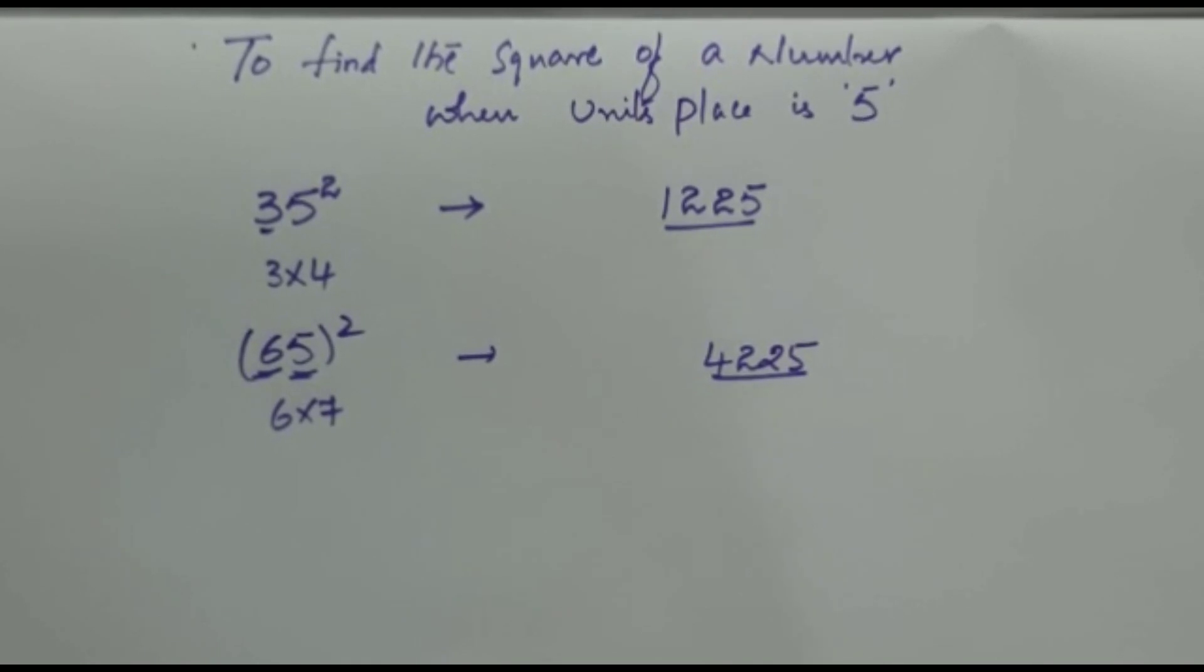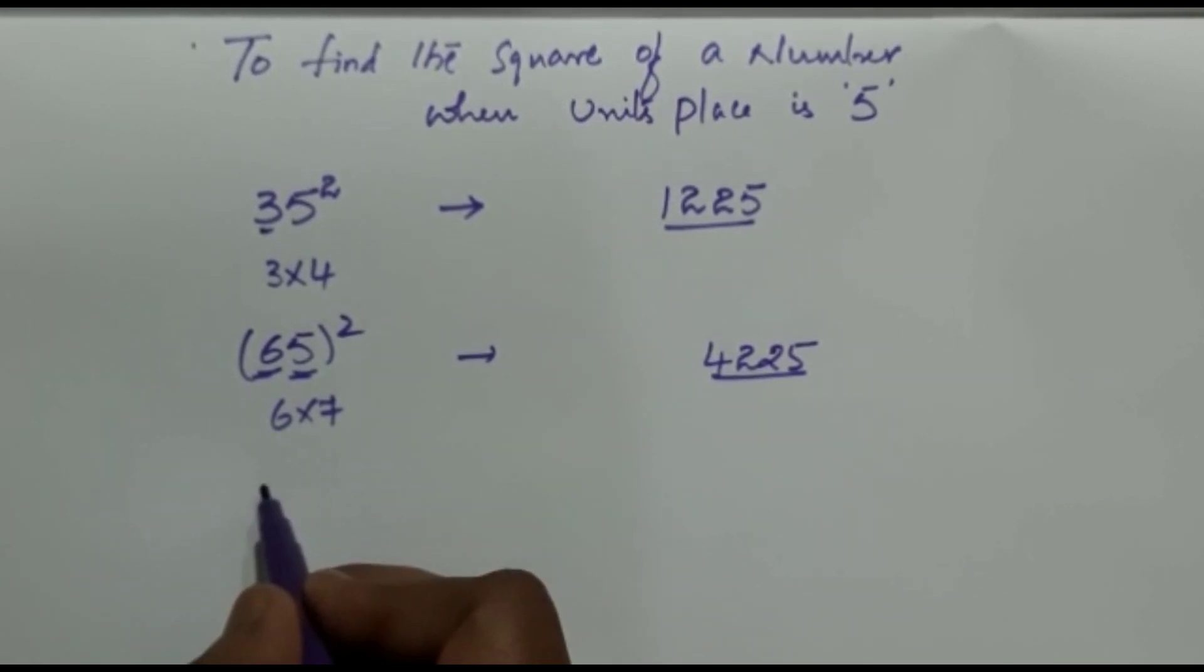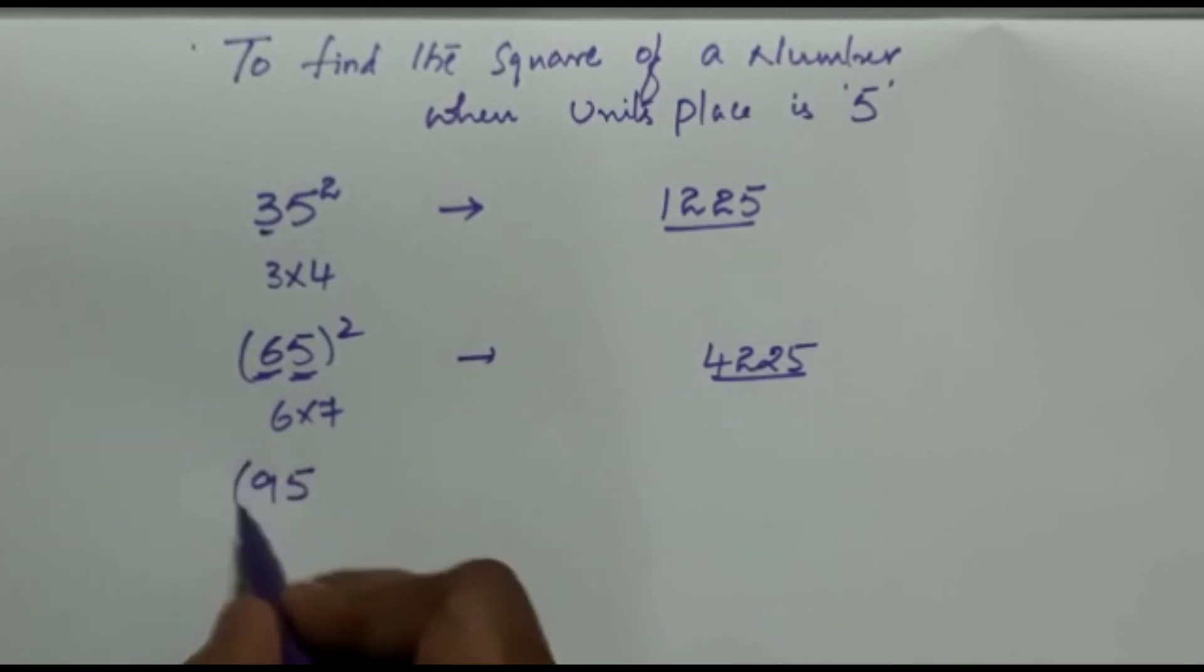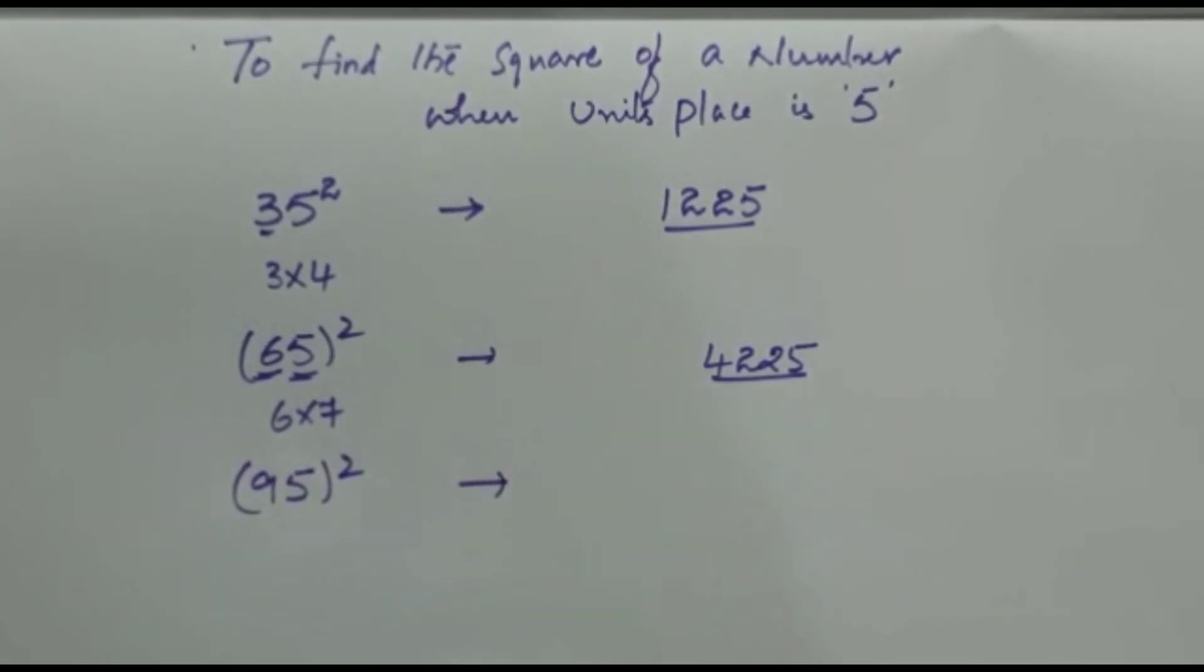Let us have another example. For example, if the number is 95, that means 95 squared. Here see, 5 is there, therefore 25.